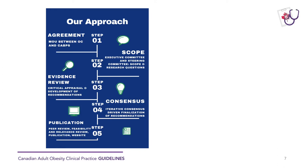The third step, once we had the scope and research questions, was to conduct the evidence review, where we partnered with McMaster University. The evidence review used a critical appraisal of the evidence to develop evidence-based recommendations. We also had a consensus-based priority setting process, as well as stakeholder engagement to develop recommendations and key messages that would be practical for healthcare professionals, people living with obesity, and policymakers.